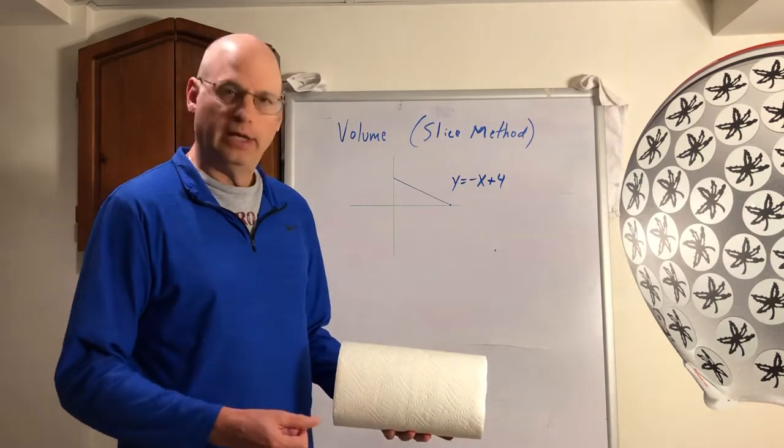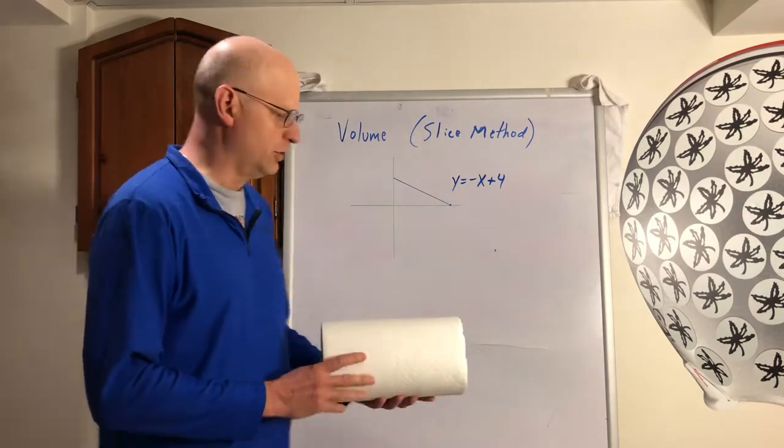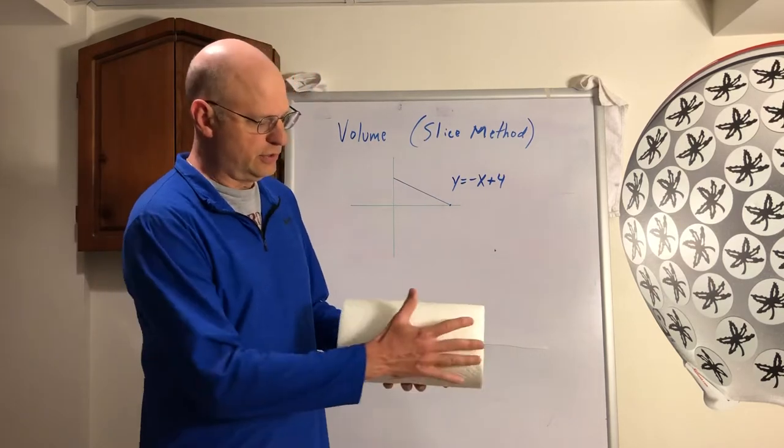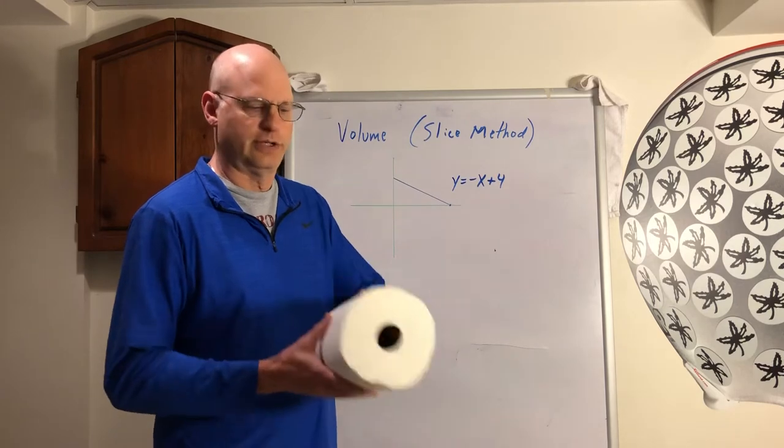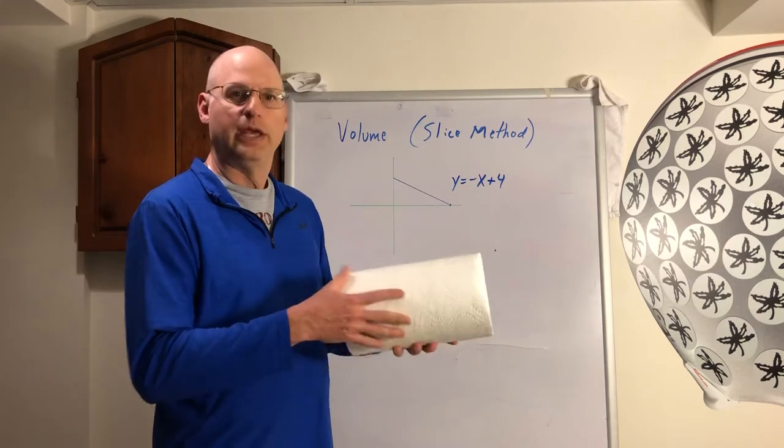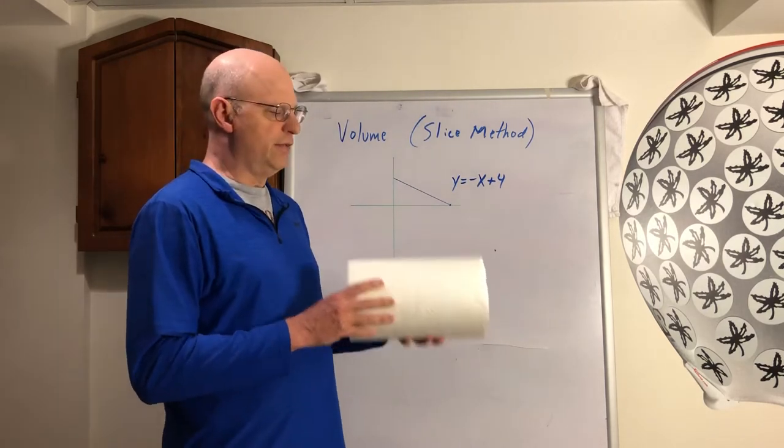This is a roll of paper towels. I don't have all my shapes from school with me, so you've got to use your imagination here. Let's just think of this as a cylinder. Forget that hole's in it, pretend that hole's not there. It's a nice solid cylinder, and we want to try to find the volume of it.